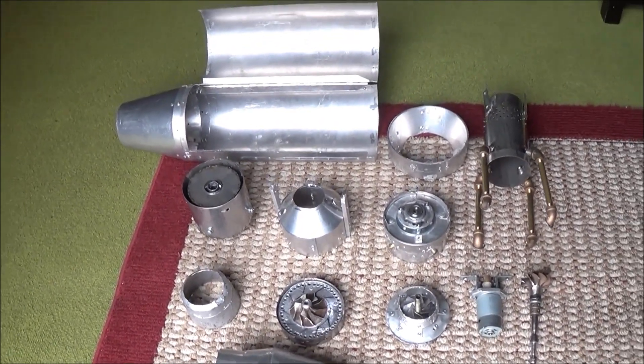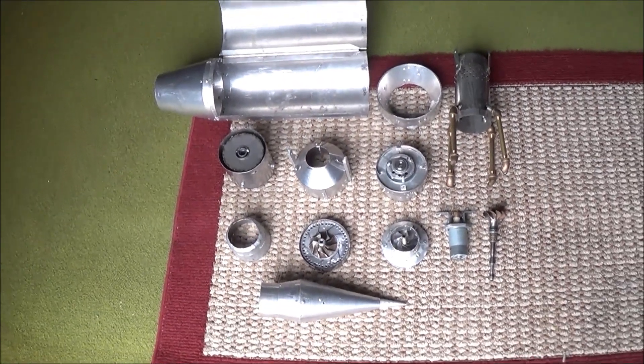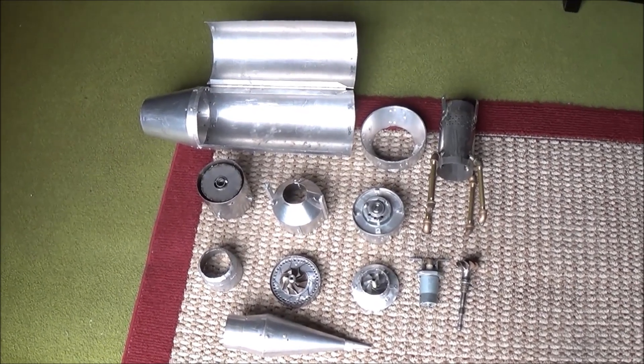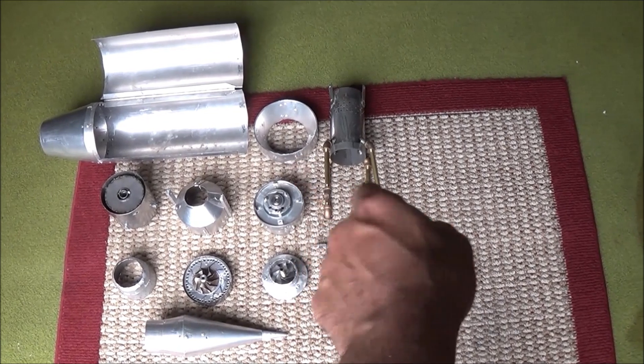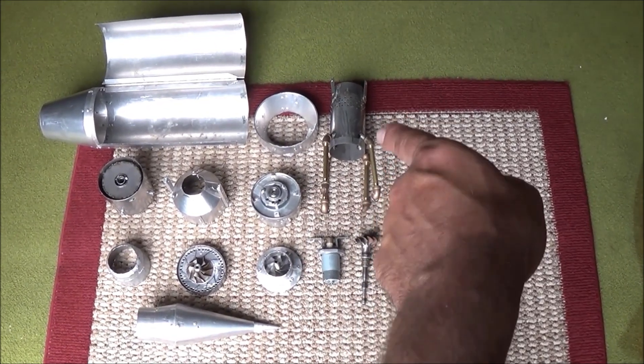These are all the different pieces that you would have to build to produce a turbo ramjet engine similar to what I'm showing you here. We've got our main body, the intake cone and retainer ring.